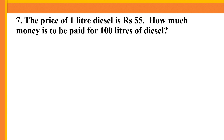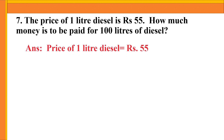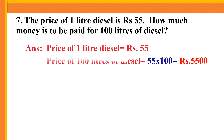Question number 7: The price of 1 liter of diesel is 55 rupees. How much money is to be paid for 100 liters of diesel? Price of 1 liter = 55 rupees. Price of 100 liters = 55 into 100 = 5,500 rupees.